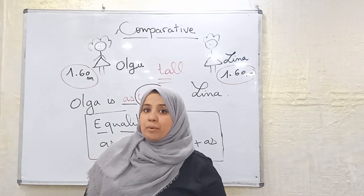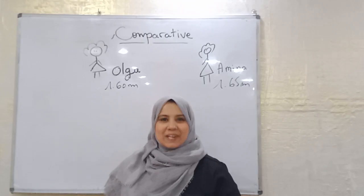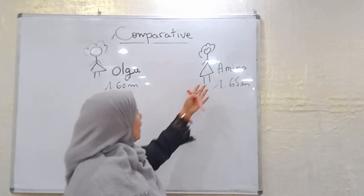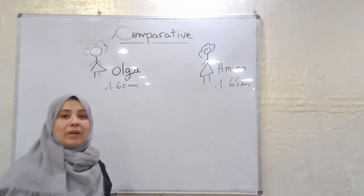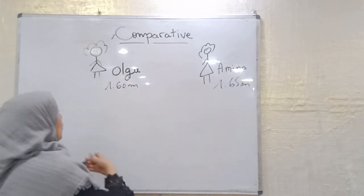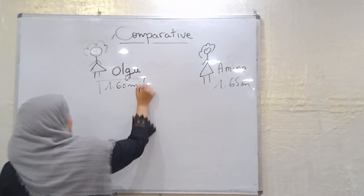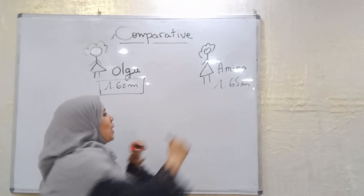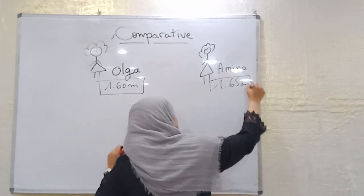Now let's move to the second part and let's compare together between Amina and Olga. We have said that Olga is 1 meter 60 in the first part, in the first example. How tall is Amina? Amina is 1 meter 65.